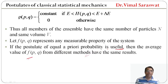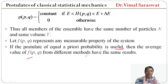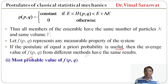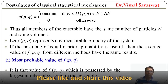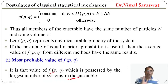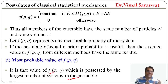Either we find the value of f from one method or another, the result will be the same. The first method is the most probable value of f. The most probable value of f is actually the value possessed by the largest number of systems in the ensemble.